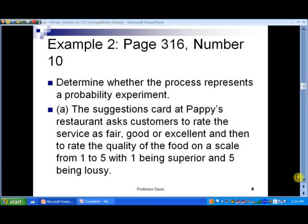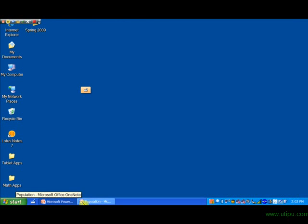So, in example 2 on slide number 8, let's try this. Let's determine whether the process represents a probability experiment. So, in part A here, it says the suggestions card at Pappy's Restaurant asks for customers to rate the service as fair, good, or excellent, and then rate the quality of food on a scale from 1 to 5, with 1 being superior and 5 being lousy. Well, let's see here. Let's think about the solution for this now.